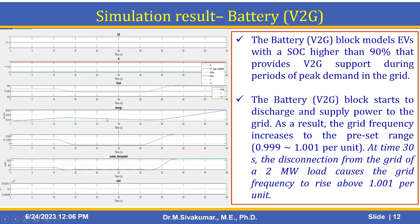As a result, the grid frequency increases to the preset range of approximately 0.999 to 1.001 per unit. After 30 seconds, the disconnection from the grid of a 2 megawatt load causes the grid frequency to rise above 1.001 per unit.